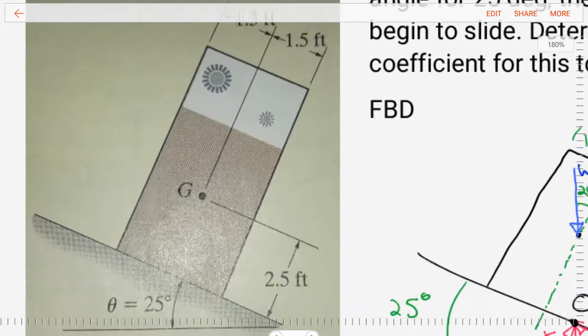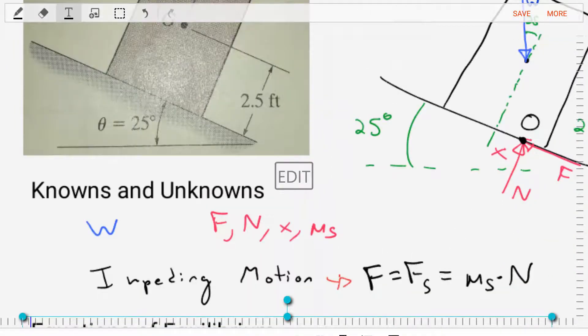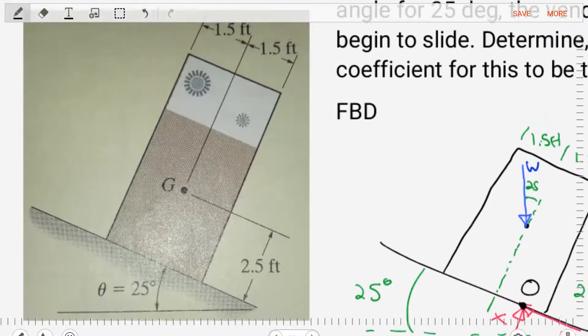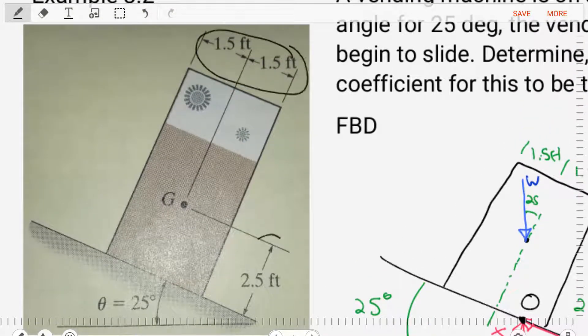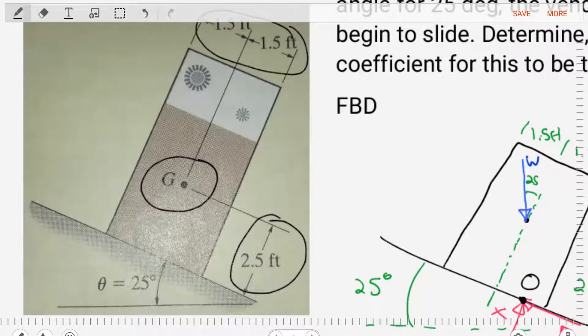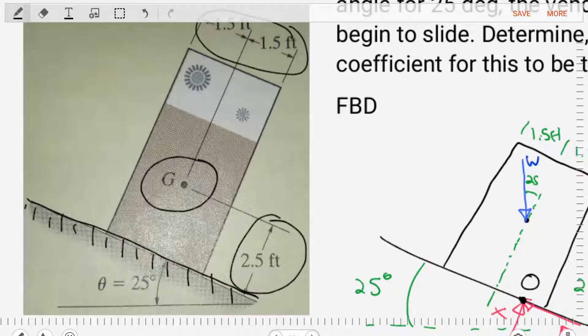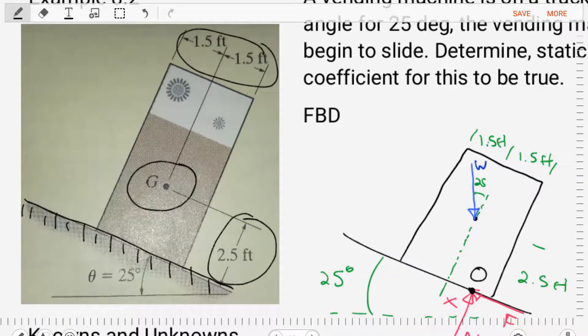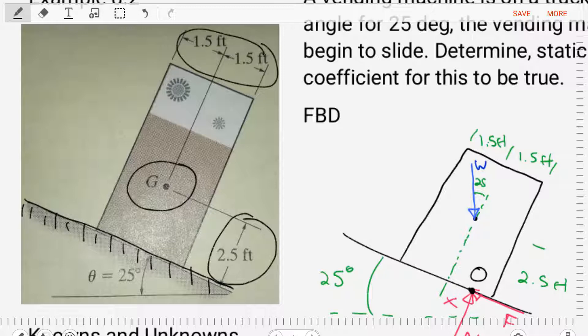If we look at the diagram we're given, it's an idealized vending machine. We're given the center of mass of this vending machine. We're also given the truck bed that it's at an angle of 25 degrees. And that's pretty much what we've got. Now, let's take this schematic and replace it with a free body diagram where we replace the supporting floor with the appropriate reactions.